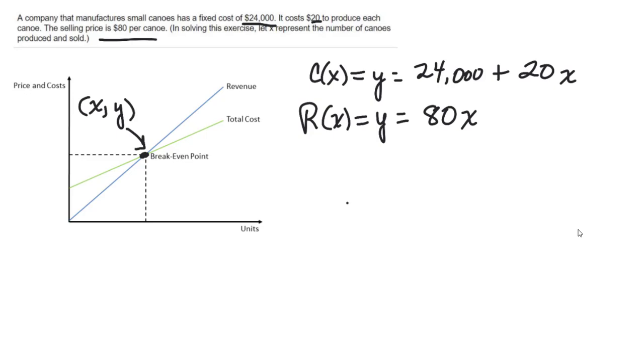So how do you find that? You simply set the two equations equal to each other because they're both y's, or you could just say you're plugging that in there. So you have 80x equals 24,000 plus 20x, and I could subtract 20x on both sides.